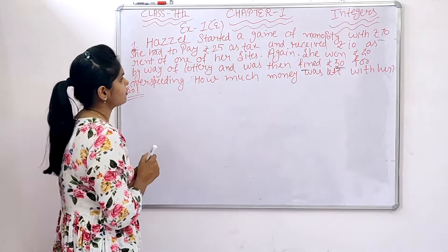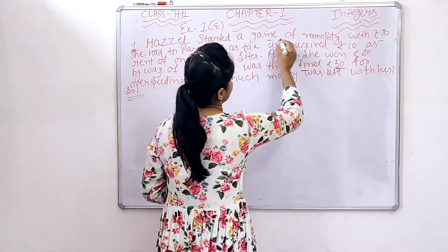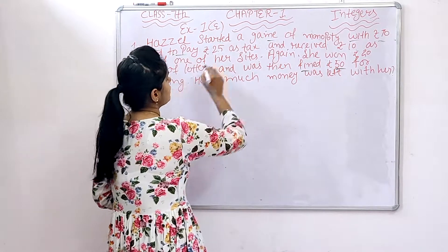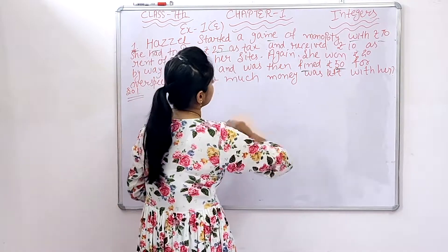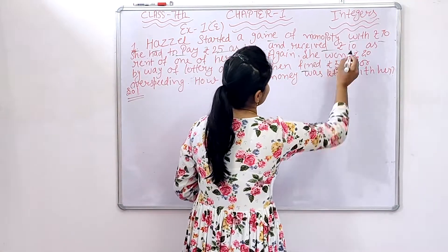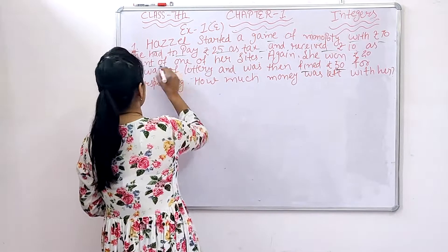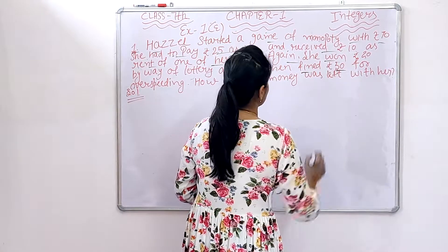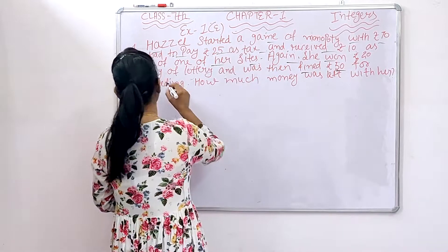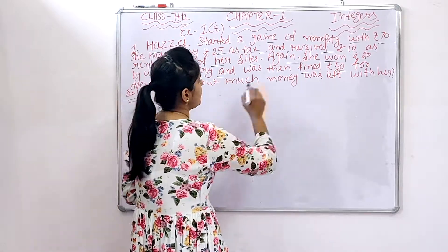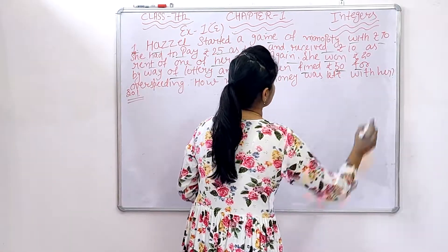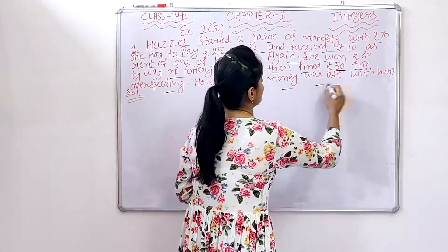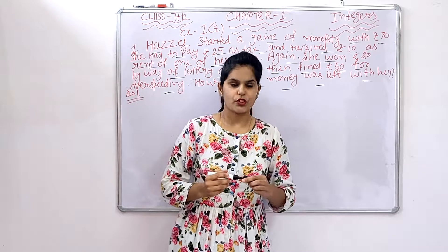She has started a game of Monopoly with Rs. 70. She had to pay Rs. 25 as a tax and received Rs. 10 as rent from one of her properties. Again, she won Rs. 20 by way of lottery and was then fined Rs. 50 for over-speeding. How much money was left with her?